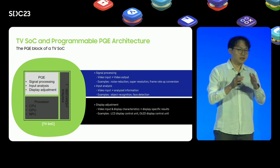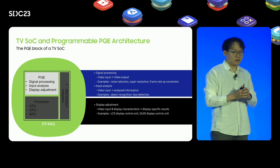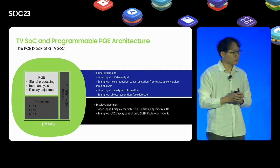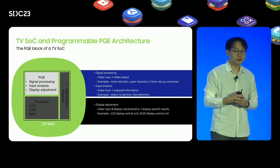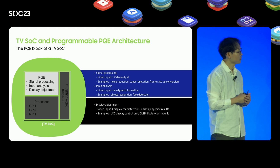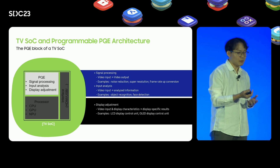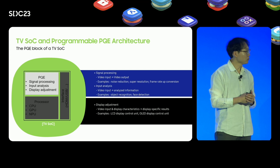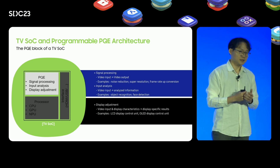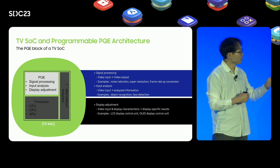When you have an 8K display device and you get a 2K size image, you should make a larger image than the input — so you need to fill in the empty data. Super resolution does that. You can simply think of super resolution as a kind of upscaling block. Frame rate conversion is also similar, but it fills empty data in the time domain. So if you have a 120Hz display device and you get 60 FPS input data, you can double the frame rate by using frame rate conversion.